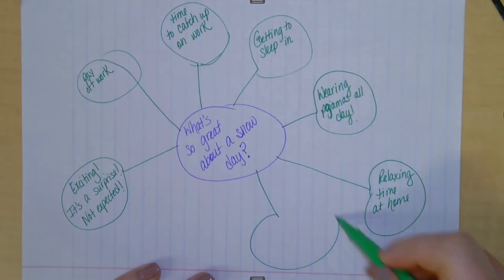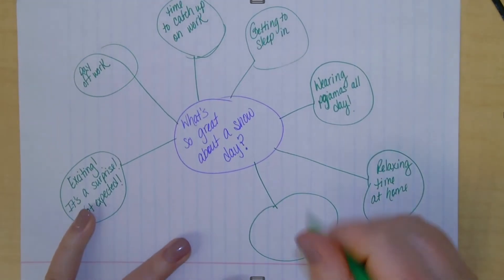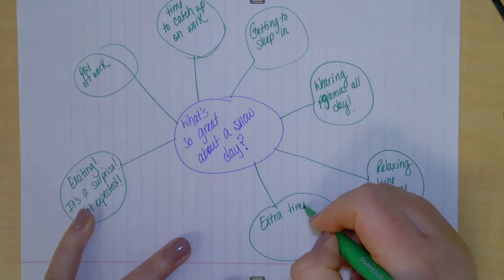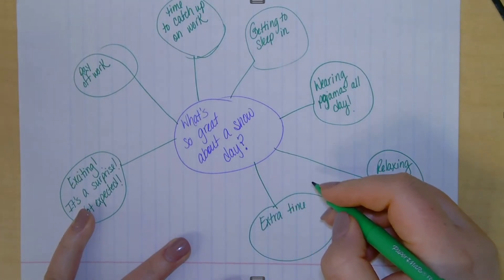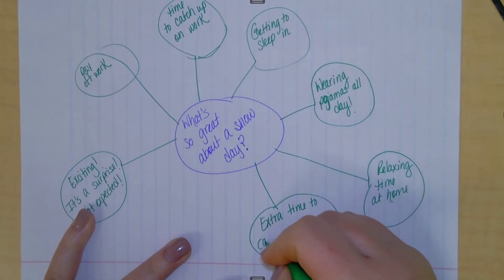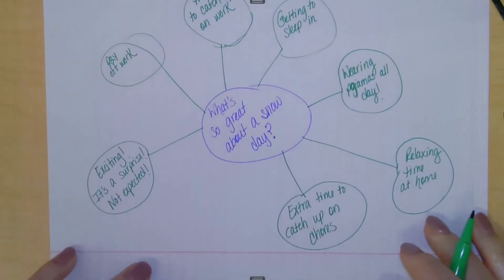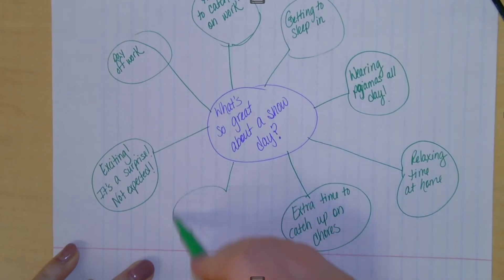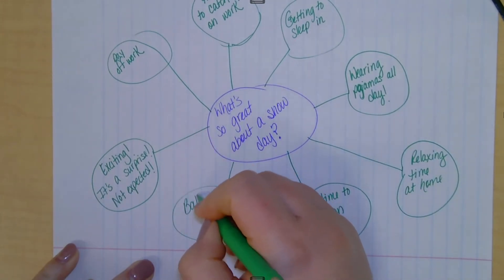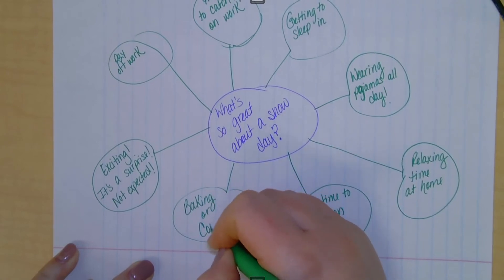It's extra time to get chores done. I don't think any kids are going to be excited about that. But as adults, we appreciate the extra time to catch up on chores, like laundry and dishes and cleaning. Another thing as an adult you might do is baking or cooking. Maybe you normally don't have time.